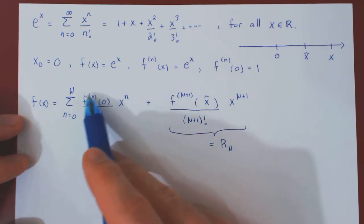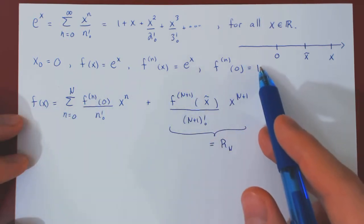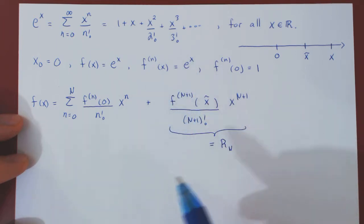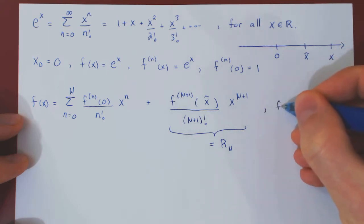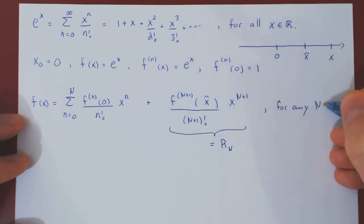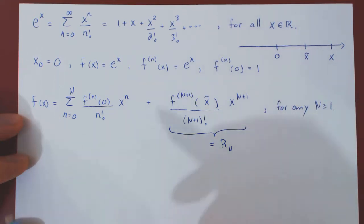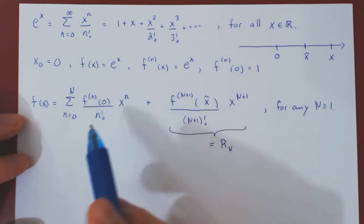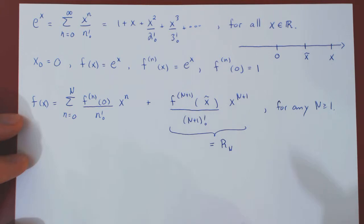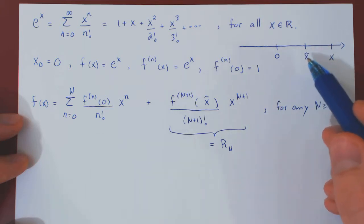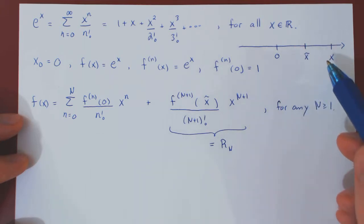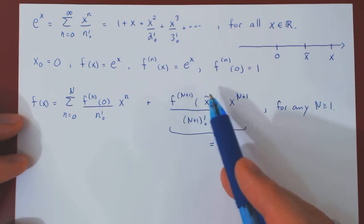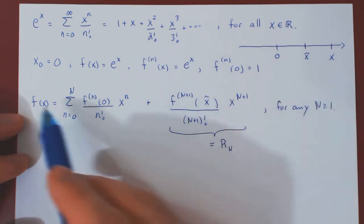We can replace the n-th derivative at 0 by 1, as it is always 1, and the n+1 derivative of f is always e to the x, so this will be e to the x hat. This is valid for any positive integer n. This is the statement of Taylor's theorem when the center x0 is equal to 0: for any choice of positive integer n, we can find some value x hat between 0 and the value of x of interest, so that if we evaluate the n+1 derivative at this well-chosen value of x, the equality is valid.